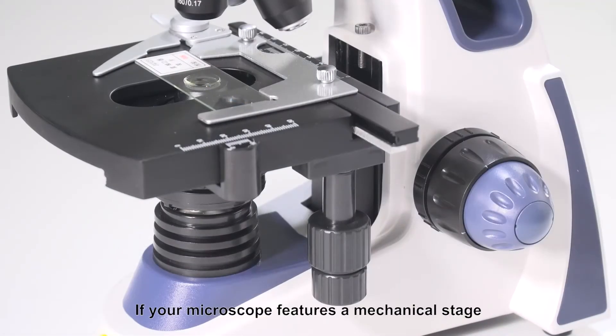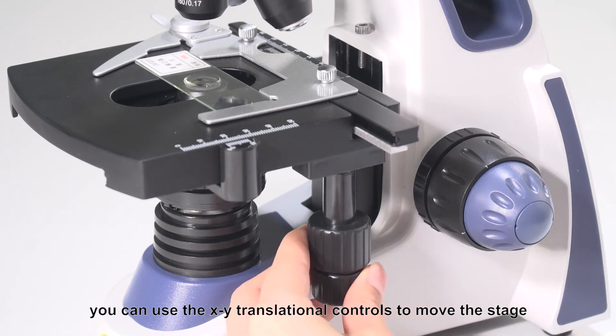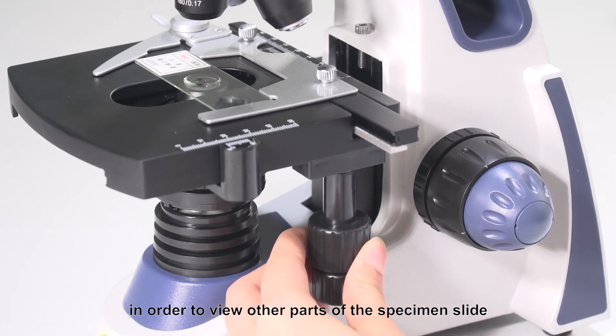If your microscope features a mechanical stage, you can use the XY translational controls to move the stage in order to view other parts of the specimen slide.